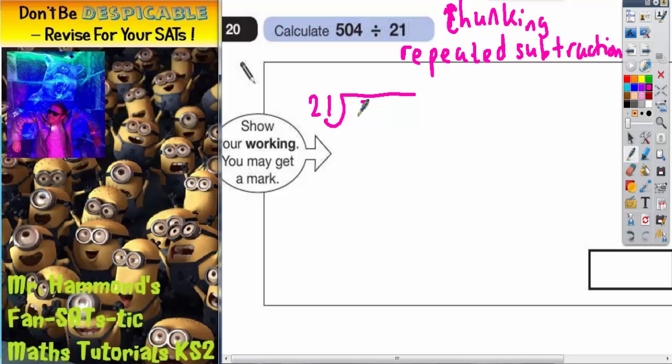It's how many 21's go into 504. Now before we talk about what we're going to subtract, let's talk about chunks of 21. And easy chunks. Easy chunks of 21 are easy multiples of 21 that we could do.